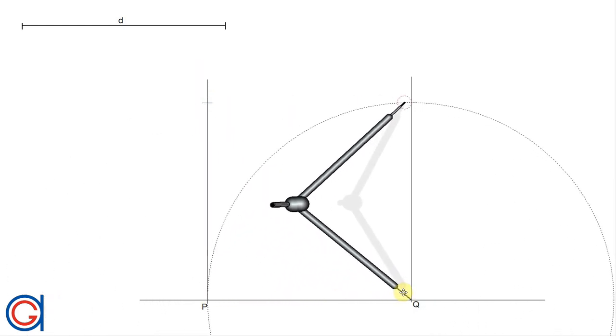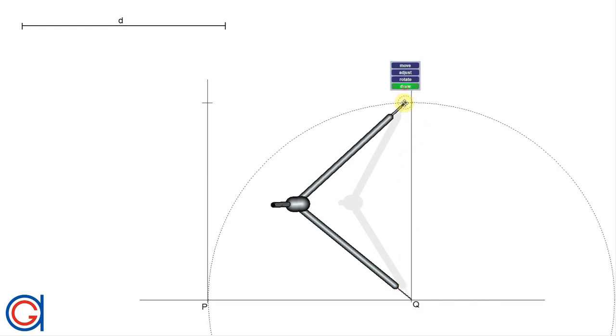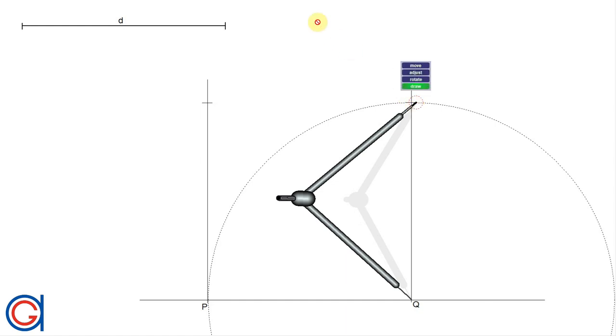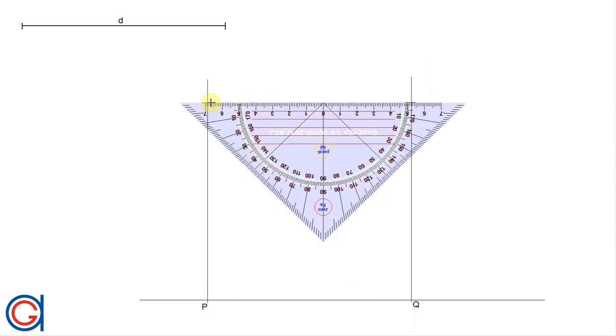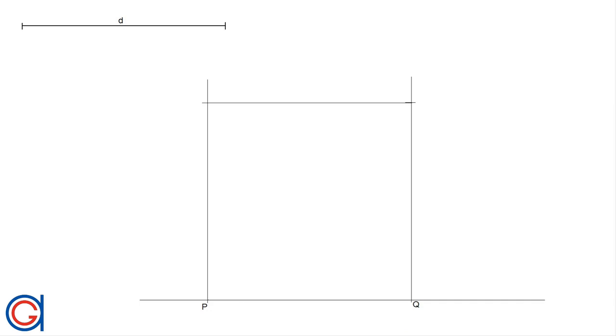Now we repeat the process, setting our compass on Q to obtain our fourth vertex. We scribe an arc on the vertical line. And finally, we join these two steps. We will call these new vertices R and S.